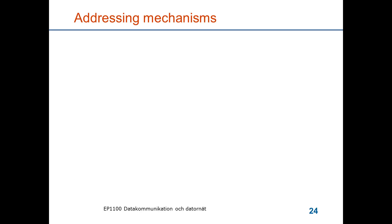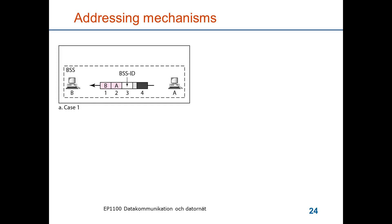The four address fields are not pre-assigned to any specific meaning; they change depending on mode, indicated by two control bits. In one mode — an ad hoc network where A sends to B — A puts its source address in the second address field, the destination address to B in the first field, and the service set ID in address field 3, while address field 4 is not used.